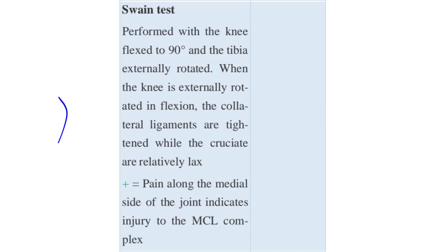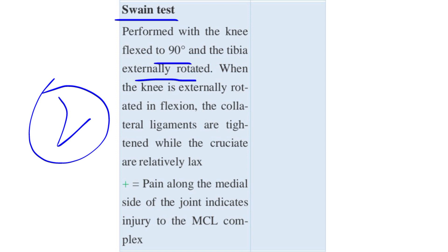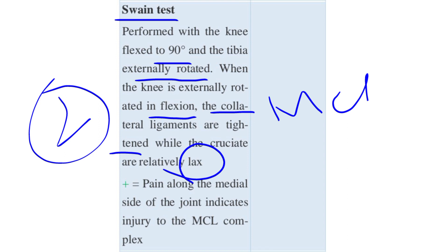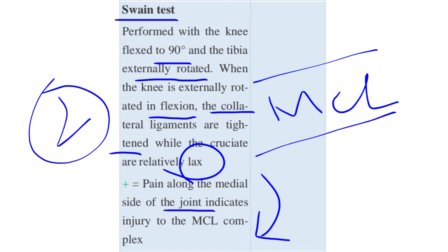The second test is the Swain test. It is performed with the knee flexed to 90 degrees and the tibia externally rotated. When the knee is externally rotated in flexion, the collateral ligaments are tightened while the cruciate ligaments are relatively laxed. If the patient feels pain along the medial side of the joint, this indicates injury to the MCL.